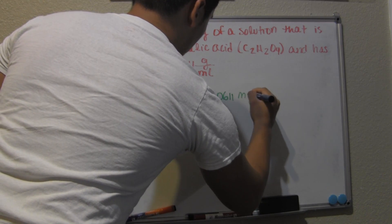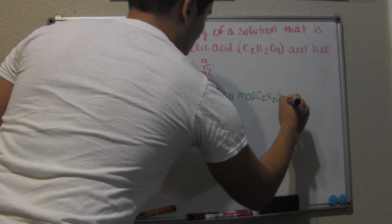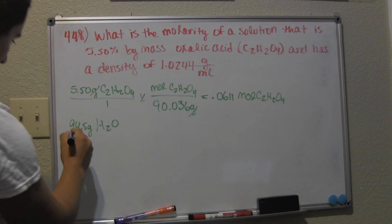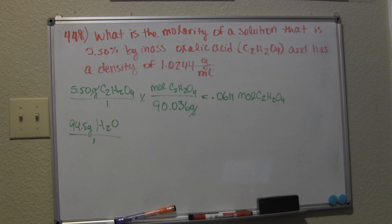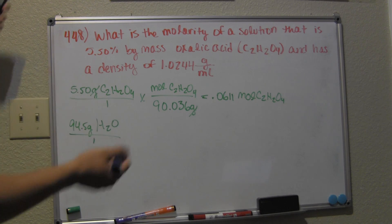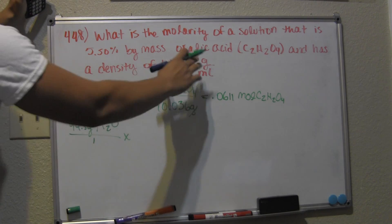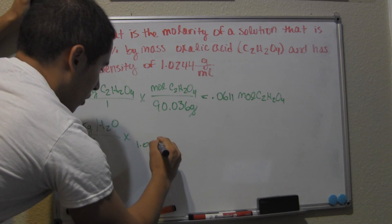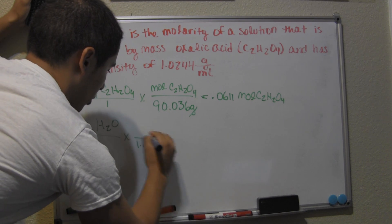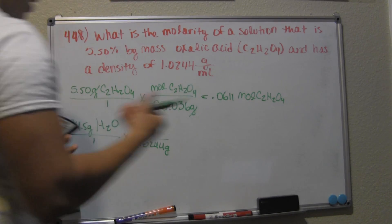Now let's work on this side of the problem. 94.5 grams of solvent—I'm writing it as H₂O—let's multiply that by the density. In order to cancel out grams, I'll write 1.0244 grams per milliliter on the denominator.